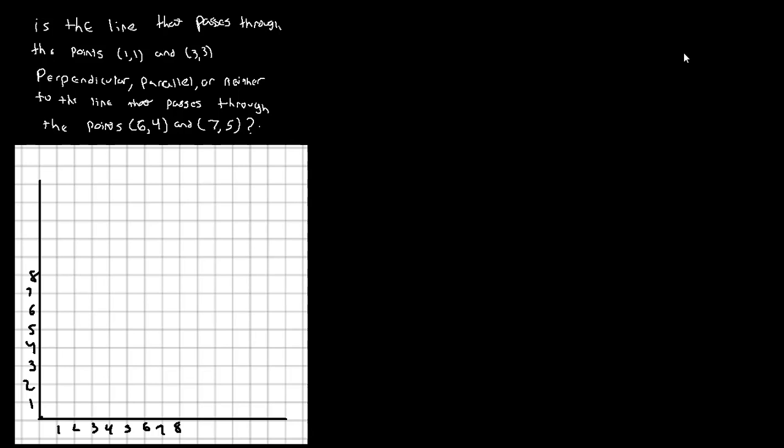I want to begin by, as I always recommend, drawing out what you have. Drawing out the information you have. So we have the point (1,1) and we have the point (3,3). And this is going to form a line, one line. And then we have, in a different color here, the point (6,4) and the point (7,5). And these are going to form some line.